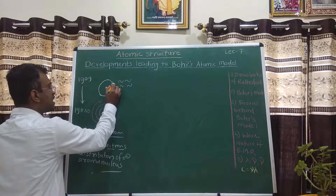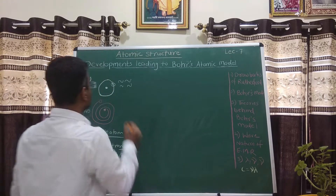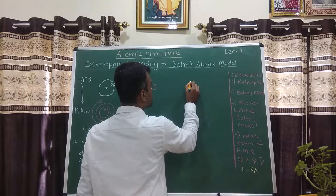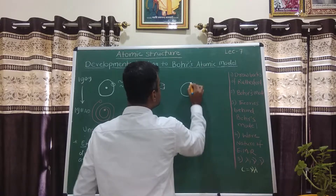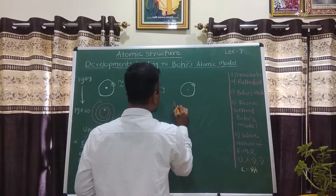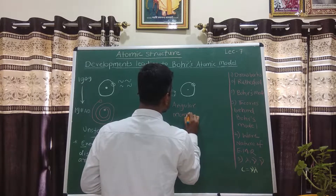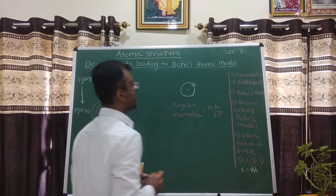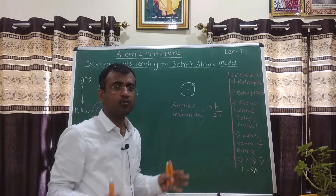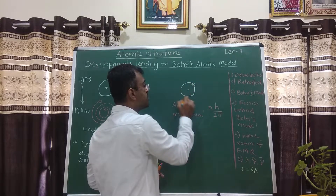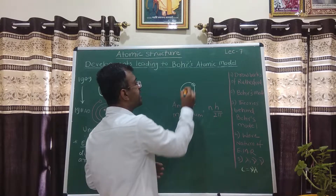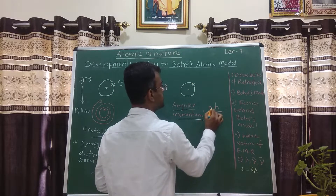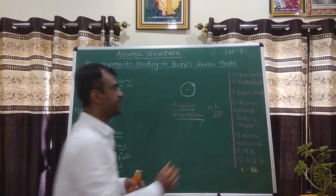What Bohr said was that electrons are indeed revolving around the nucleus, but not randomly. Electrons revolve around the nucleus only in those orbits for which angular momentum is an integral multiple of h/2π, where h is Planck's constant.